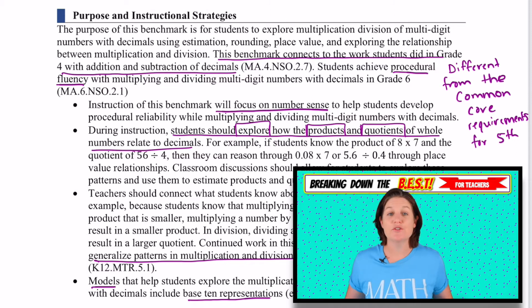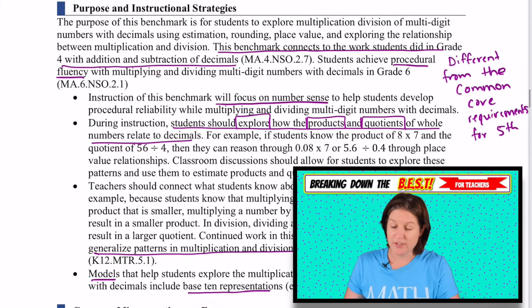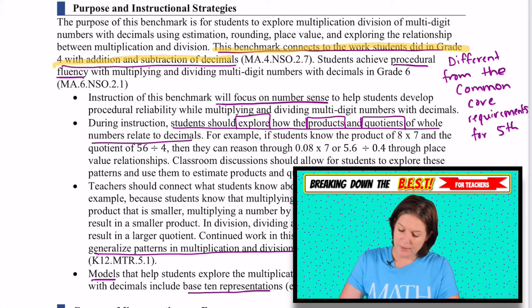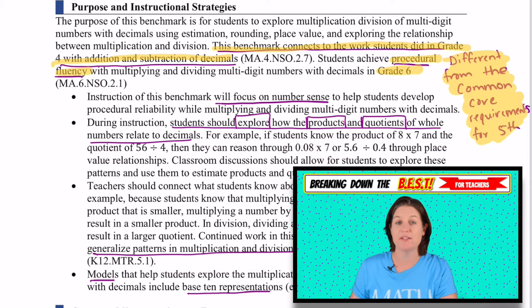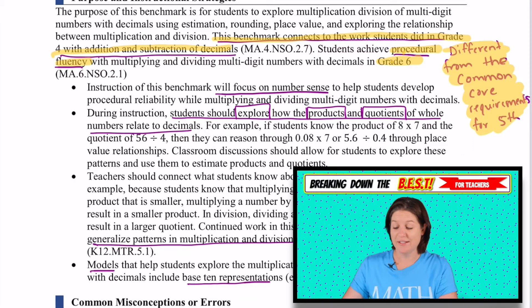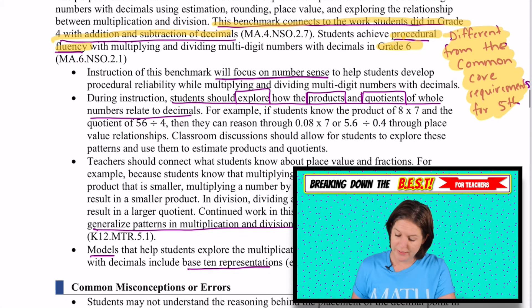Next we have the purpose and instructional strategy section. This benchmark connects to the work students did in fourth grade with adding and subtracting of decimals. Students achieve procedural fluency in sixth grade. This is the exploration level - lots of hands-on, lots of drawings, lots of making sense of what's happening with these numbers. This is different from the common core requirements for fifth grade, where we did multiply and divide with decimals at a little bit more intensity. I actually like that we're starting with this and that the number sense is there.